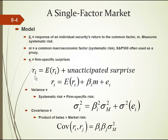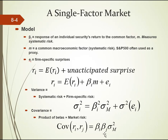The single factor market model simplifies our equation. It says the rate of return of any asset is its expected return plus some unanticipated surprises. More clearly: the return on an asset equals its expected return plus beta times M, where beta is the response to a common factor — in this case the stock market risk — and M is that factor. The residual E is the unanticipated surprise. Variance is measured by beta squared times the variance of the market plus the variance of the residuals. To find covariance, you multiply the betas times the variance of the market.